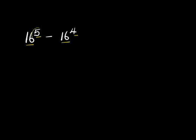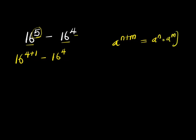So we can express this 5 here as summation of 4 and 1, of 16 power 4 plus 1, minus 16 power 4. Now if you have a power n plus m, this equals a power n times a power m. So applying this right here I will have 16 power 4 times 16 power 1 minus 16 power 4.